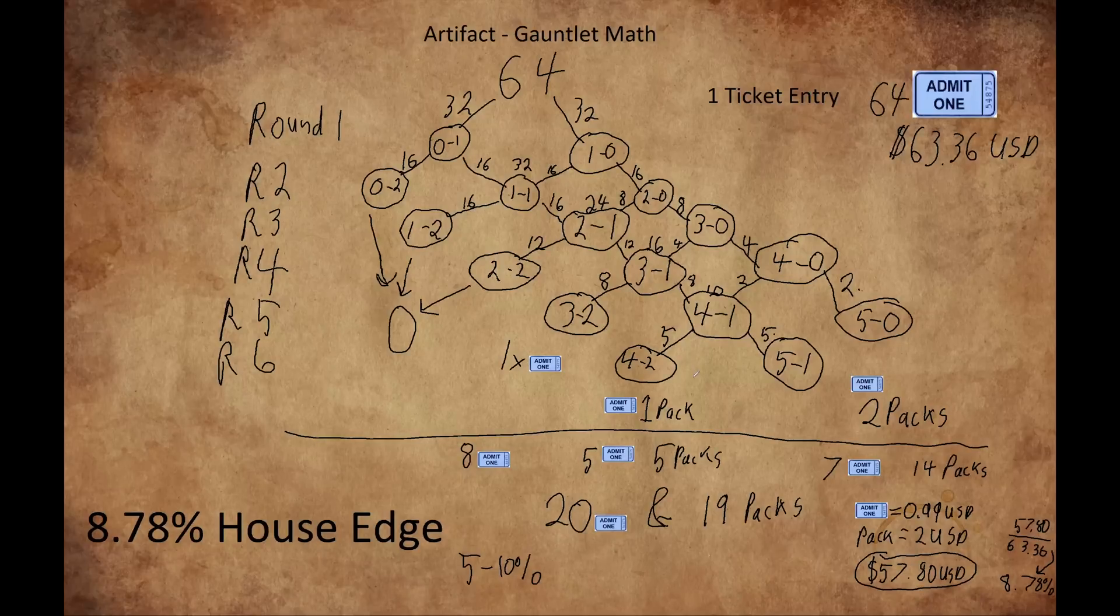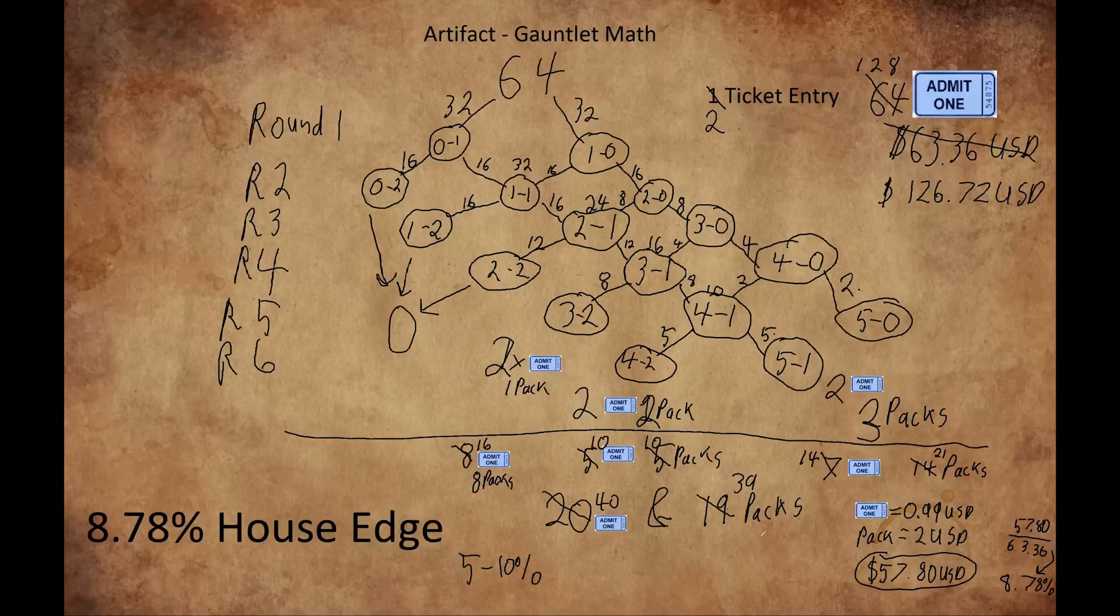If we want to look at Keeper Drafts, things get much more complicated. If you have 5 packs you are going to open anyways, we can remove those packs from the equation and simplify things down to this, and we see that we get a better value here with only 7.2% host cut.